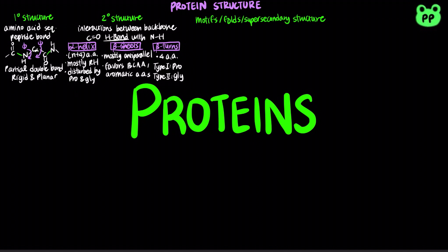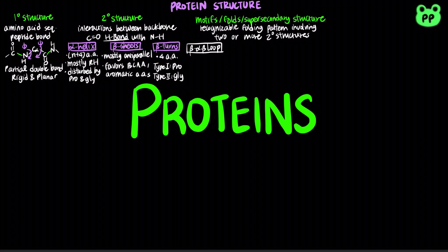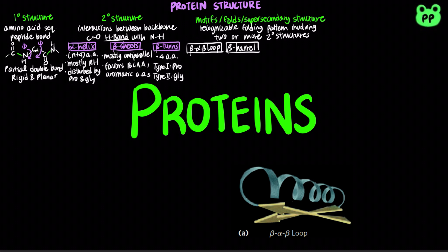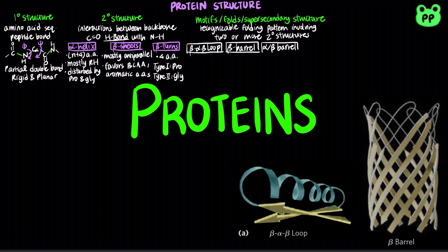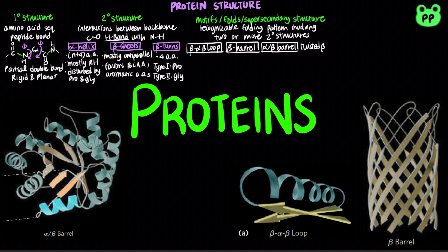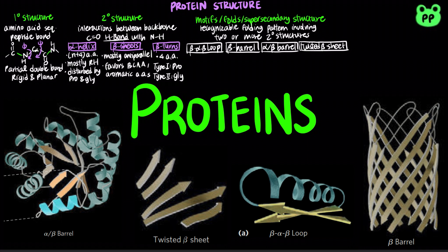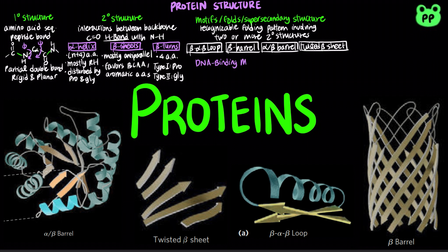A motif, fold, or super-secondary structure refers to a recognizable folding pattern involving two or more elements of secondary structure and the connections between them. Examples include beta-alpha-beta loop, beta barrel, alpha-beta barrel, twisted beta sheets, and some DNA binding motifs and protein binding motifs.